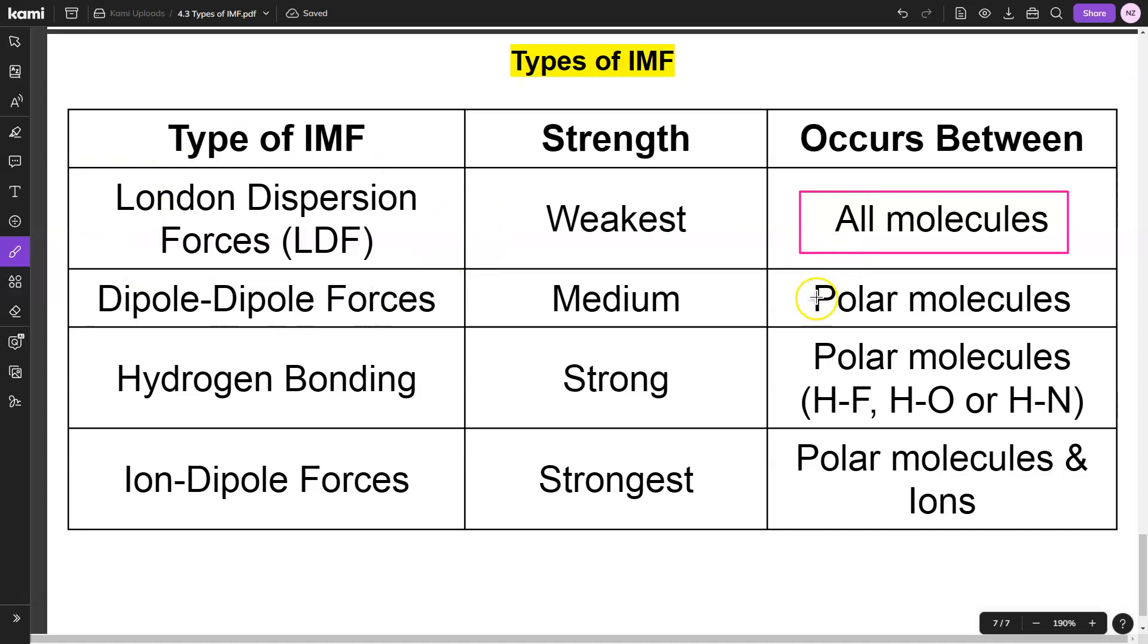Polar molecules will have the other ones. Polar molecules will, of course, have London dispersion, but every polar molecule will also have dipole-dipole. Some will have hydrogen bonding if one of these three bonds is present, and if you have a polar molecule and an ion, you'll have ion-dipole. And those are the intermolecular forces.